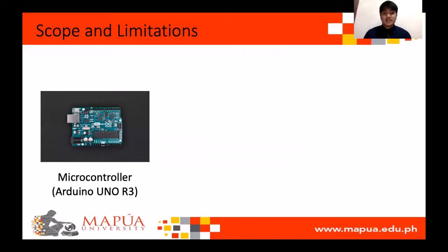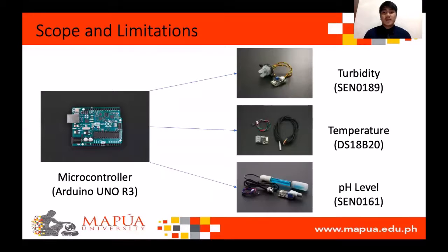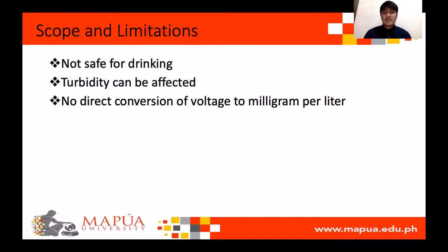Scope and Limitations. This device is made up of a system of sensors that will be controlled by a microcontroller and will be mounted on a floating device. Limitations include: the reliability of this device when it comes to drinking water; turbidity can be affected by the current's velocity in the river due to aggregates being transported; and the turbidity sensor provides a measurement in volts with no direct conversion to milligram per liter.